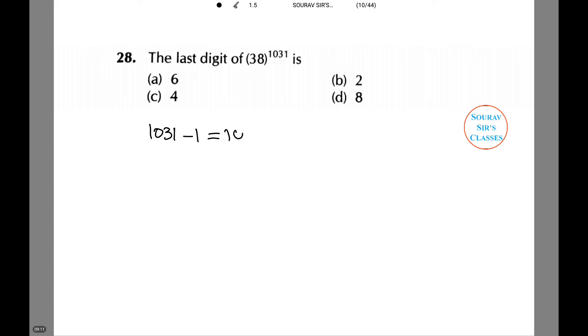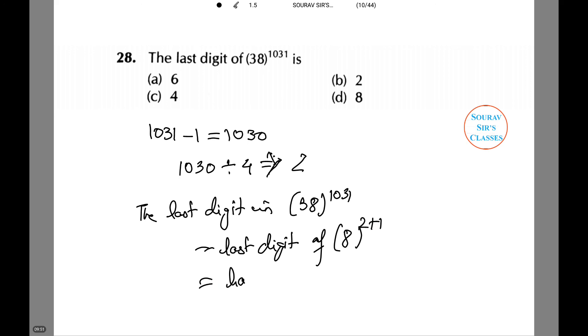1031 - 1 equals 1030. The remainder when 1030 is divided by 4 equals 2. Therefore the last digit of 38^1031 equals the last digit of 8^(2+1), which equals the last digit of 8³, which is equal to 2.